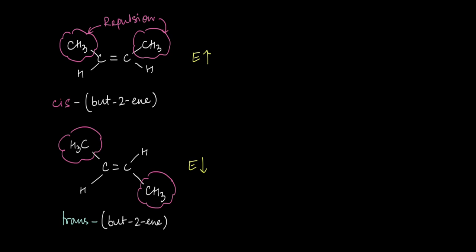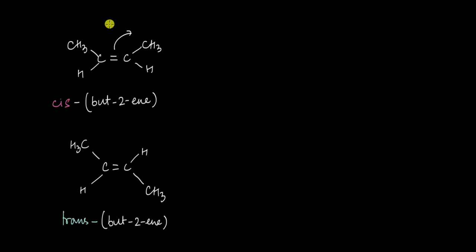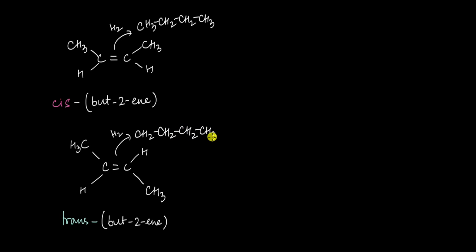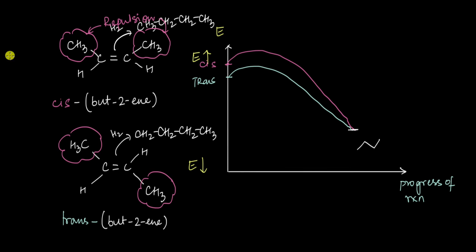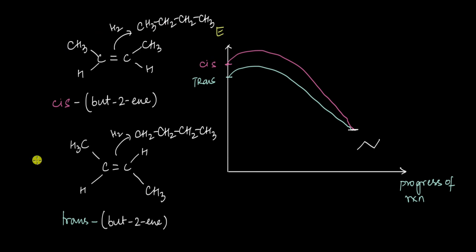In both cases — whether we take cis-but-2-ene or trans-but-2-ene — adding hydrogen gives us butane. So the energy of the product is the same in both cases. But because cis-but-2-ene is slightly higher in energy due to repulsion between the alkyl groups compared to trans-but-2-ene, the heat of hydrogenation for the cis form is going to be slightly higher compared to the heat of hydrogenation of the trans form.